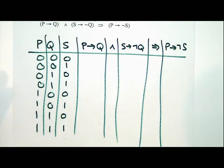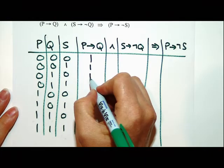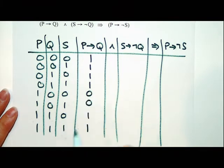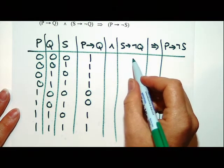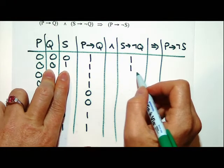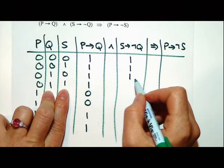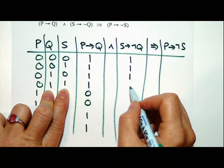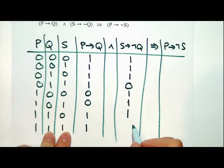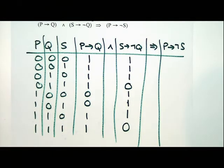Then we look for P implies Q. That is true when P is false, or Q is true. So if P is false, I can do the first four rows really easy. And then when Q is true, it's going to be the last two, so I put zeros in the other ones. For S implies not Q — when S is false, that's true. Q is false in that case, so that's true. The only two falses are where both S and Q were true.